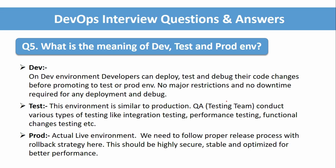The production environment is the actual live environment. We need to follow a proper release process with a rollback strategy. If something goes wrong with the deployment — due to code mismatches, package version mismatches, or different environment variables — we need to be ready with a rollback strategy to immediately roll back to the previous stable version. Production should be highly secure, stable, and optimized for best performance. We need to be very careful for any production release to avoid major downtime or other circumstances.